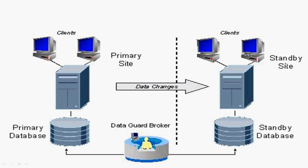Let me take this slide for you. Here you can see there are two sites: the first one is the primary site and the second one is the standby site. Whatever connections are coming to the primary database — the primary site database is up and running. In the Data Guard setup, whatever changes you are going to do on the primary database, the same changes are going to reflect on the standby database.